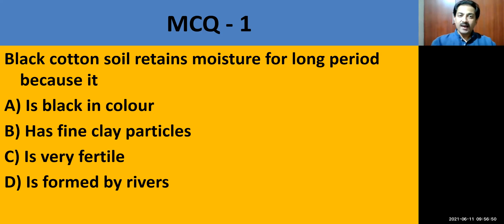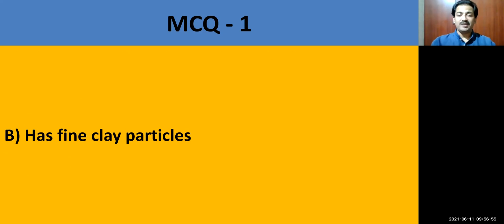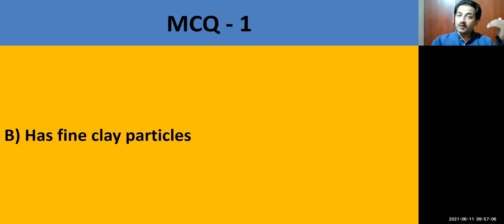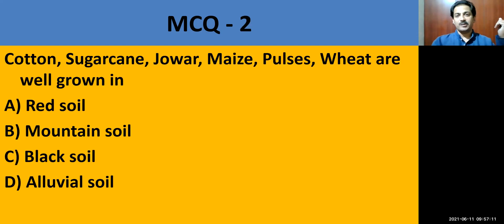Black cotton soil retains moisture for a long period because it has fine clay particles. Because of fine clay particles, it retains moisture for long, and particularly cotton, jowar, maize, and even sugarcane can be grown in this soil.